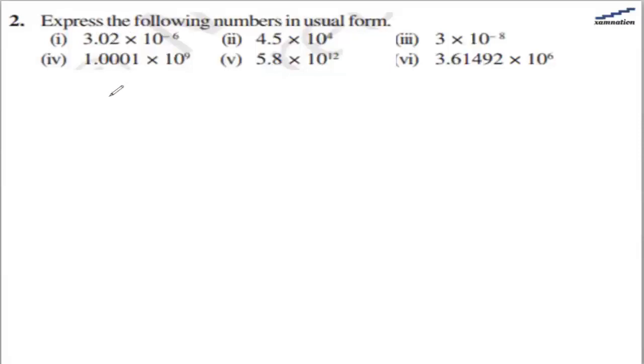We need to express the numbers in usual form. So 3.02 × 10^-6, that will be 3.02 and we have 6 zeros, so that will be 0.000003 and 02. That is the answer for the first part.